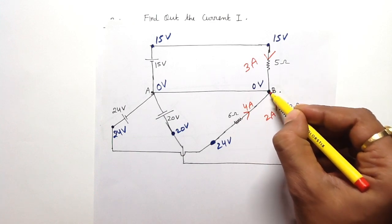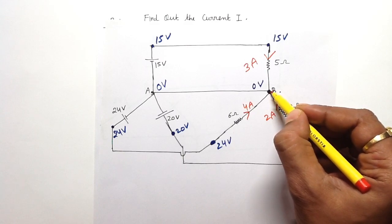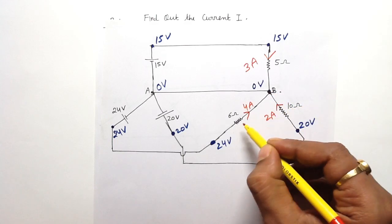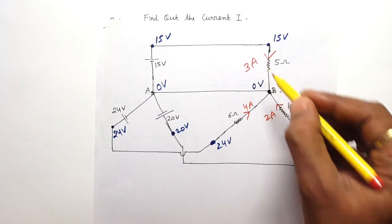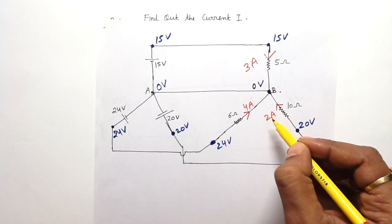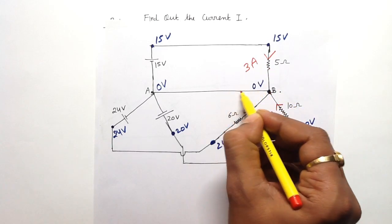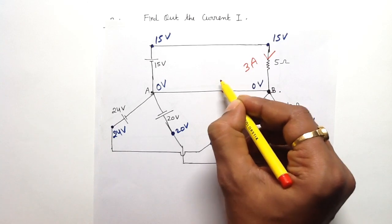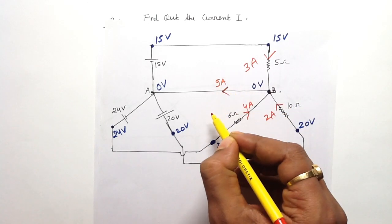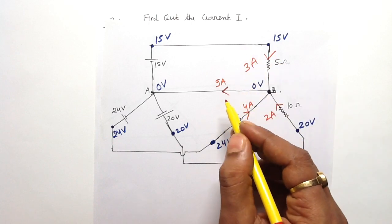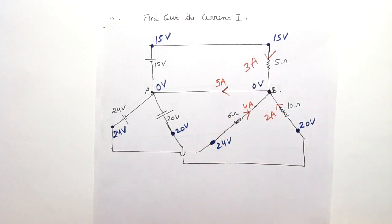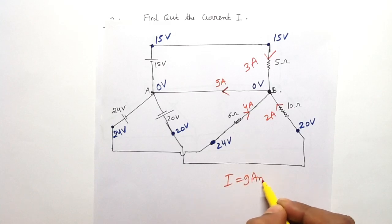Applying KCL at point B, the sum of incoming currents is 4 + 2 + 3 = 9 ampere. Therefore, the sum of outgoing current will also be 9 ampere, so the current I in branch AB is 9 ampere. This is the final answer.